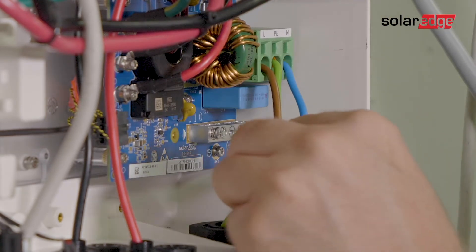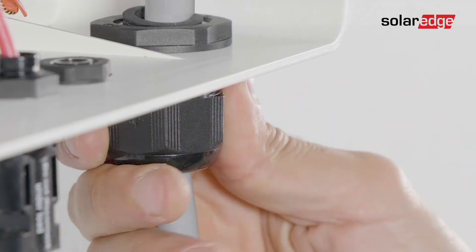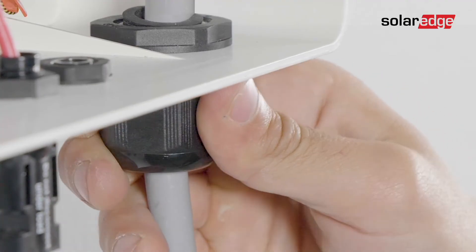Make sure the AC wires are firmly connected. Then close the AC gland around the cable external insulation.